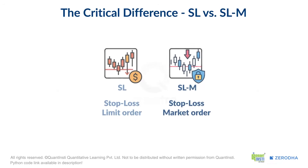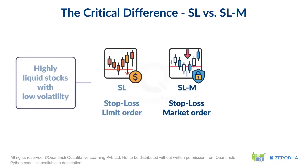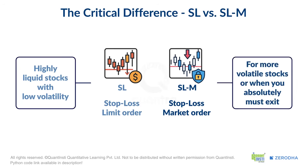So which one to use? A simple rule of thumb: for highly liquid stocks with low volatility, an SL order is fine. For more volatile stocks, or when you absolutely must exit, an SLM order is often safer.